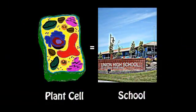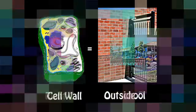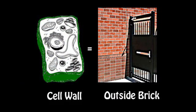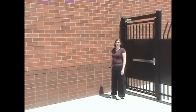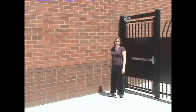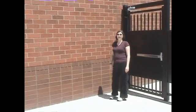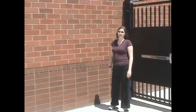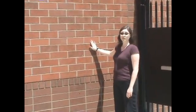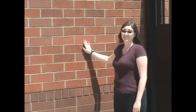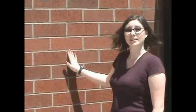A plant cell is like a school. The cell wall is like a brick wall of a school. The cell wall is a feature found only in plant cells. It provides structure and support to the cell. This brick wall of the school is a lot like the cell wall of a plant cell because it provides support and protection for the school building.